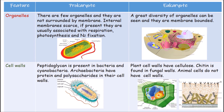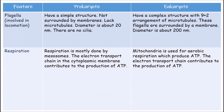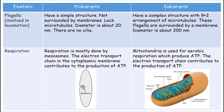Animal cells do not have a cell wall. Prokaryotic flagella have a simple structure, are not surrounded by a membrane, lack microtubules, and have a diameter of about 20 nanometers; there are no cilia. Eukaryotic flagella have a complex structure with a 9+2 arrangement of microtubules, are surrounded by a membrane, and have a diameter of about 200 nanometers. Respiration in prokaryotes is done mostly by mesosomes — folded invaginations in the plasma membrane — where the electron transport chain contributes to ATP production.